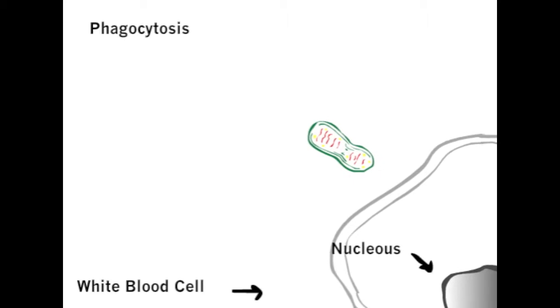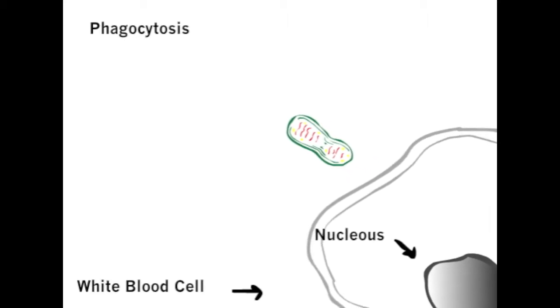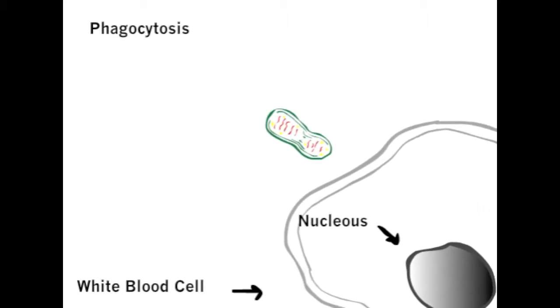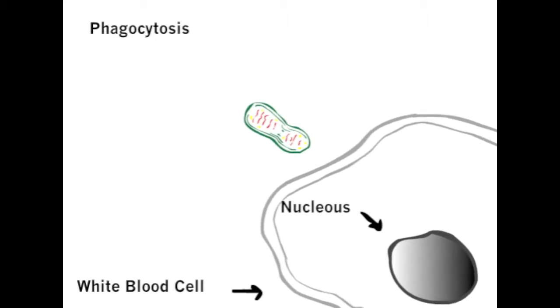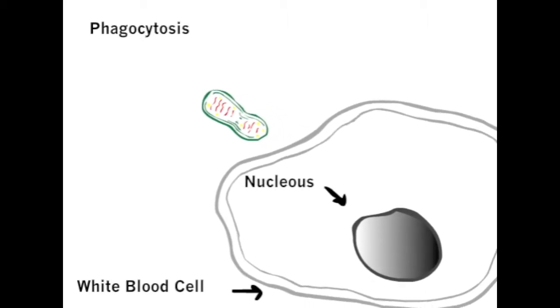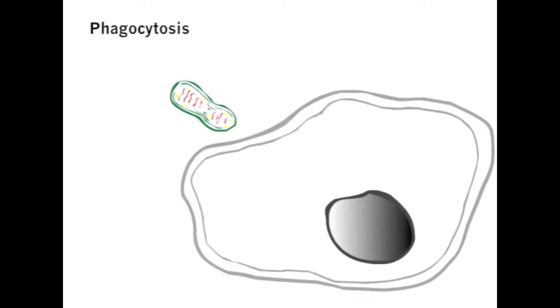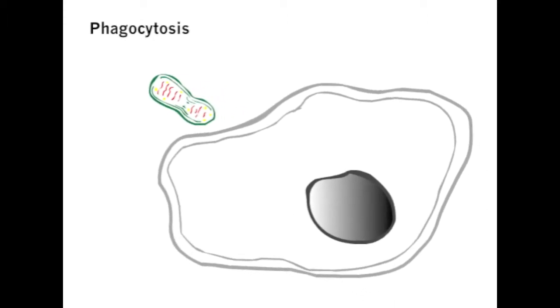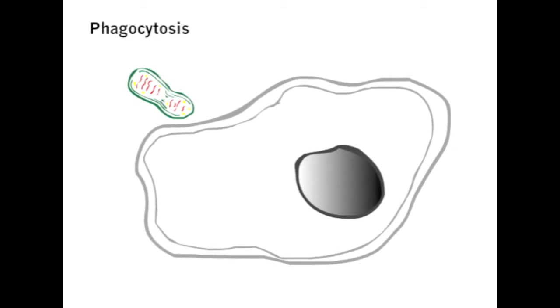The first of the types of vesicle transport is phagocytosis. This is when the cell eats and the nutrients it gets are of a solid. Sometimes it's just big proteins or molecules that are too big to get through the membrane by other means. But this is also what happens when cells engulf other cells, like in the case of white blood cells.